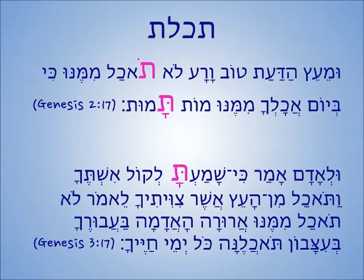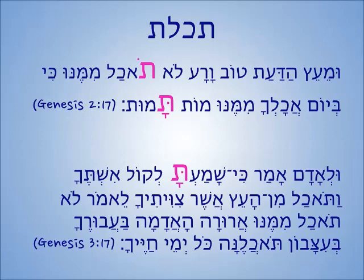In the next example, Genesis 3:17, we see the taf at the end: 'Ula adam amar ki shamata lakol ishtacha' — and to Adam he said because you listened, past tense, to the voice of your wife. The taf at the end of a verb means you did something in the past tense. So both tafs — you will do and you did — surround this word kol, which means all.